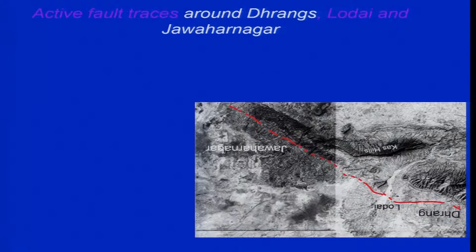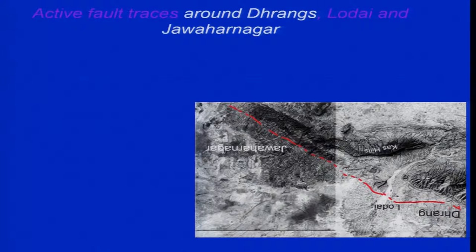This is the Corona satellite photo — I have put it upside down just to compare with the aerial photographs we took. Locations visible include Jawaharnagar, Lodai, and Drang. This is the fault line, and based on our studies we suggest this fault line is active and capable of producing large magnitude earthquakes in the near future. The question was whether this fault line was responsible for the 2001 Bhuj earthquake.